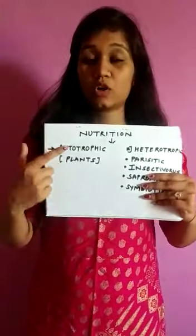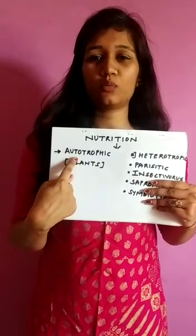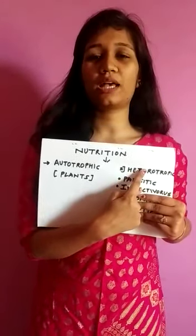The first one is autotrophic nutrition and the second one is heterotrophic nutrition, as you all can see. We are going to discuss autotrophic nutrition first. Autotrophic nutrition is a type of nutrition in which an organism prepares its own food by itself using simple substances from the environment. The organisms that exhibit this type of nutrition are called autotrophs, and the autotrophs in the world are plants.